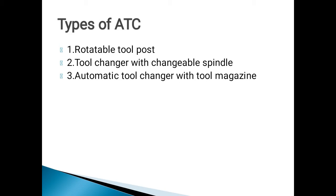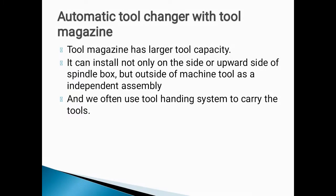The types of ATC are as follows. First is the Rotatable Tool Post, which can be seen in CNC lathe machines. Second is the Tool Changer with Changeable Spindle. Third is the Automatic Tool Changer with Tool Magazine, which can be seen in VMC CNC machines. Amongst all types of Automatic Tool Changer, the Automatic Tool Changer with Tool Magazine is the fastest.